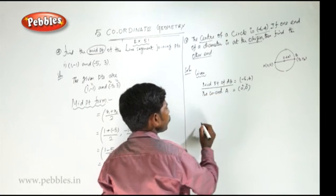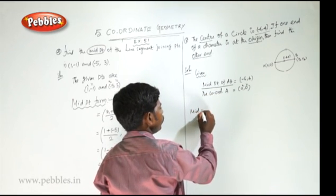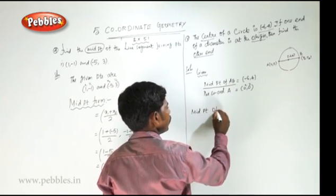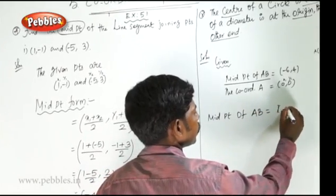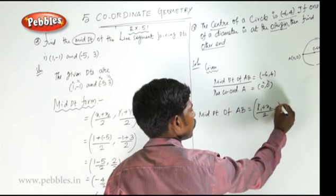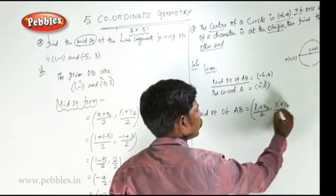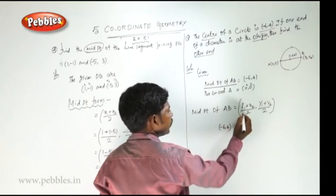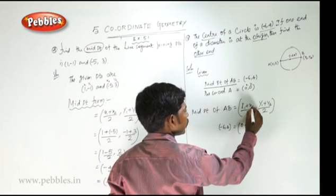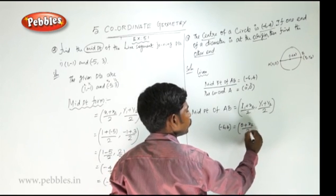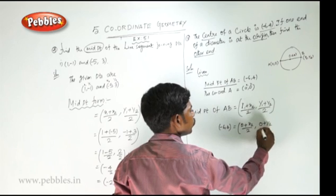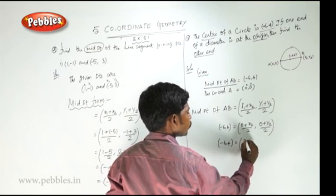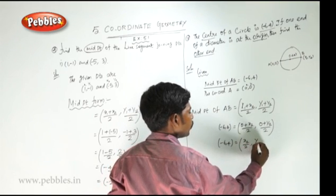Since the given is a midpoint, we write the midpoint formula: midpoint of AB = (x1 + x2) / 2, (y1 + y2) / 2. The midpoint of AB is (-6, 4). x1 is 0 plus x2 (unknown), comma y1 is 0 plus y2. So (-6, 4) is equal to (x2 / 2, y2 / 2).